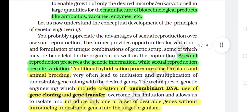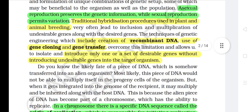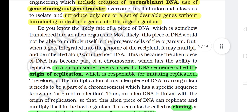Let us now understand the conceptual development of the principles of genetic engineering. Sexual reproduction provides opportunities for variations and formulation of unique combinations of genetic setup, some of which may be beneficial to the organism and the population. Asexual reproduction preserves genetic information while sexual reproduction permits variation. Traditional hybridization procedures in plant and animal breeding very often lead to inclusion and multiplication of undesirable genes along with the desired genes. Genetic engineering techniques — including creation of recombinant DNA, use of gene cloning and gene transfer — overcome this limitation, allowing us to isolate and introduce only desirable genes without introducing undesirable genes into the target organism.